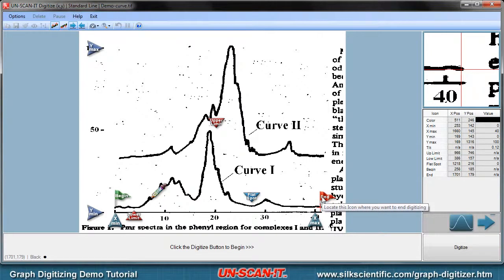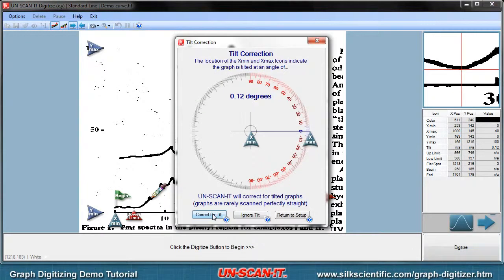After all the setup icons are placed on the image, click the digitize button in the lower right corner of the screen. If your graph is slightly tilted, the Unscannit software will give you the option to correct for that tilt. The Unscannit software will then automatically follow the data line. The software can also be paused and continued using the button in the lower right corner of the screen.